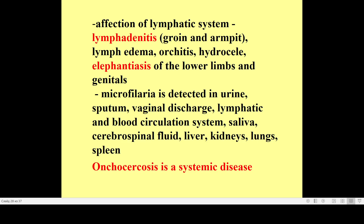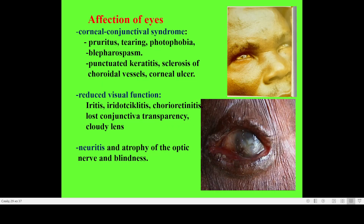Microfilariae may be revealed in blood but can also be detected in urine, sputum, lymphatic circulation, saliva, and cerebrospinal fluid — practically everywhere. Onchocerciasis is a systemic disease. Whereas Wuchereriasis and Brugiasis are mostly problems of the lymphatic system, onchocerciasis may present as a systemic disease, and the most dangerous manifestation is affection of the eyes.